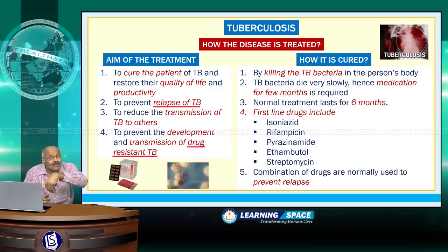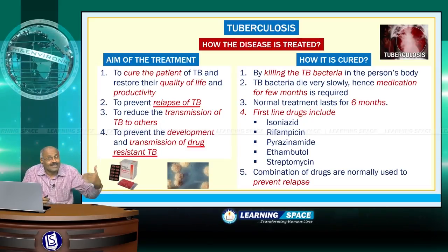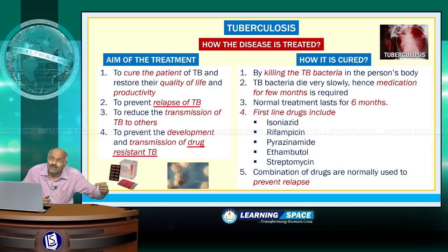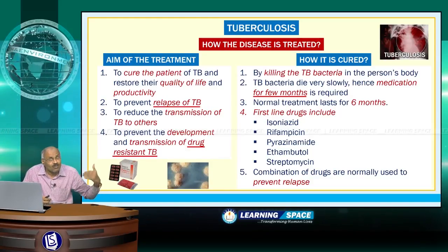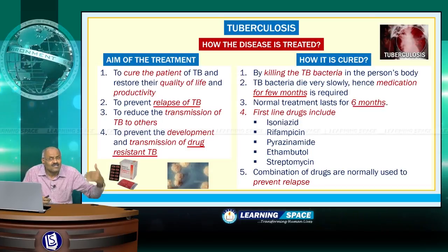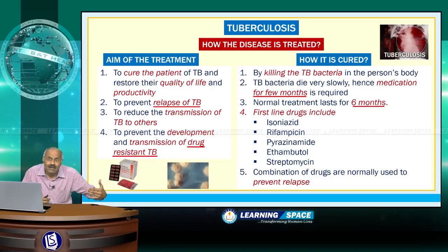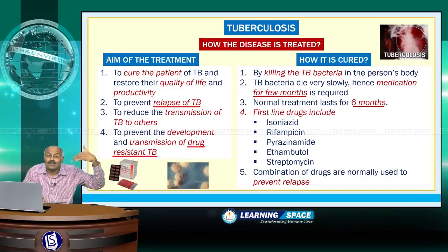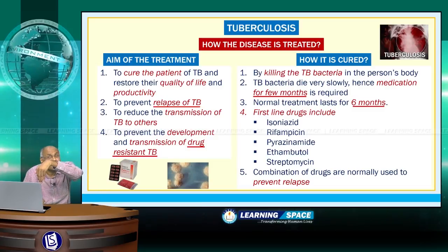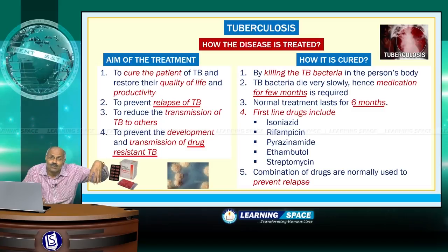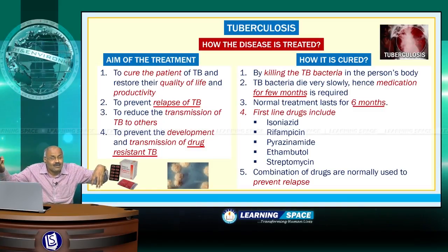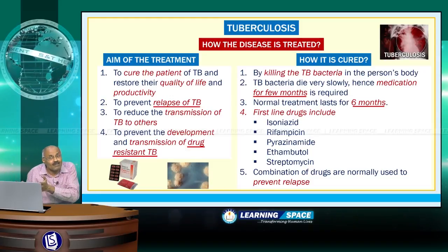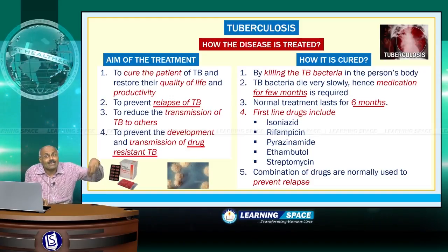Treatment involves killing the tuberculosis bacteria in the person's body. Tuberculosis bacteria die very slowly, so medicines are required for a few months — normal treatment is six months. The first-line drugs include isoniazid and rifampicin. Combinations of drugs are also used to prevent relapse. The aim is to avoid spreading to others, prevent drug-resistant TB, prevent relapse, and at least six months of medication is required.